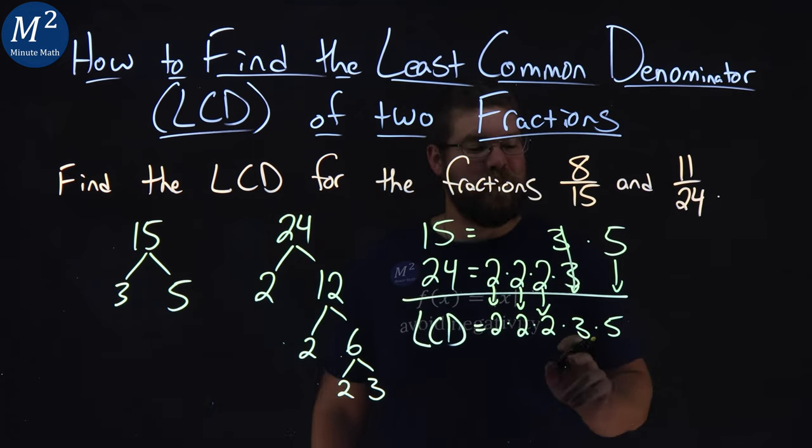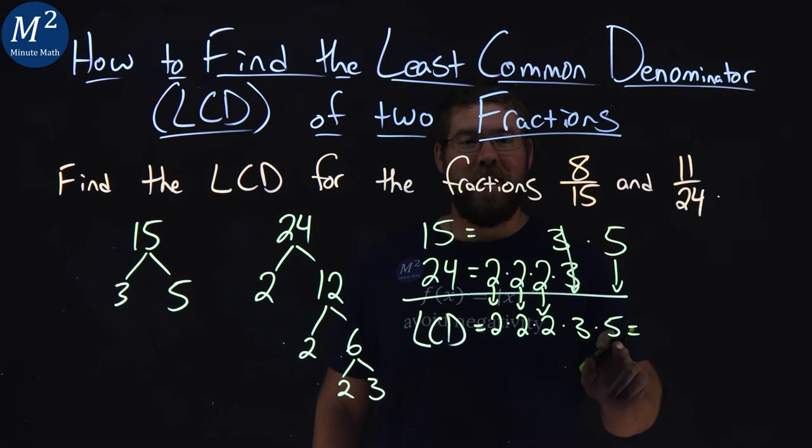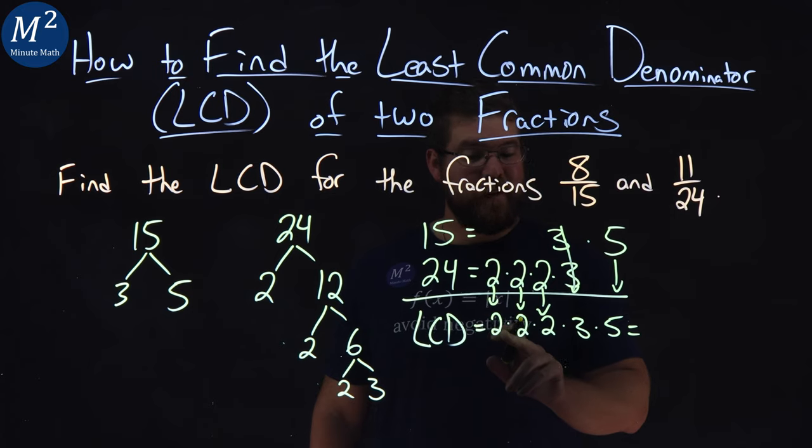Now we have to multiply this out. Three times five is fifteen, times two is thirty, times two is sixty, times two is one hundred and twenty.